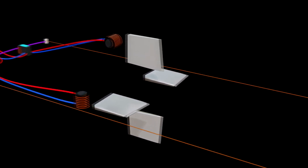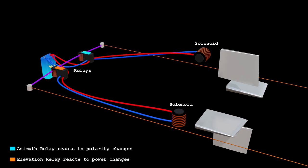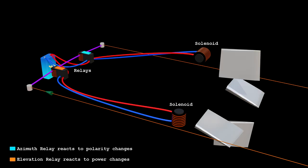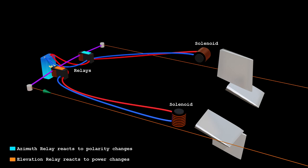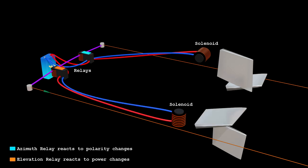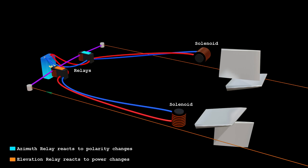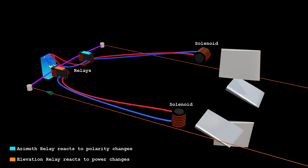The relays in the missile react to the polarity and current changes and switch the internal circuits. The azimuth relay detects a change in polarity and switches the solenoid in opposite direction. The elevation relay detects a lower current and switches its adjacent solenoid. When the polarity is changed back, the azimuth relay makes the azimuth solenoid turn around. When the current is back at the initial level, the elevation relay switches the internal circuit and the elevation solenoid jumps back to the other side.